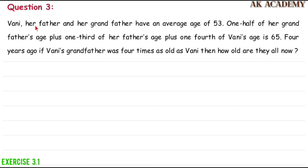Vani, her father and her grandfather have an average age of 53. One half of her grandfather's age plus one third of her father's age plus one fourth of Vani's age is 65. Four years ago, if Vani's grandfather was four times as old as Vani, then how old are they all now?